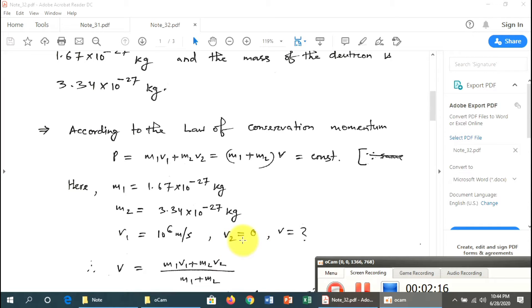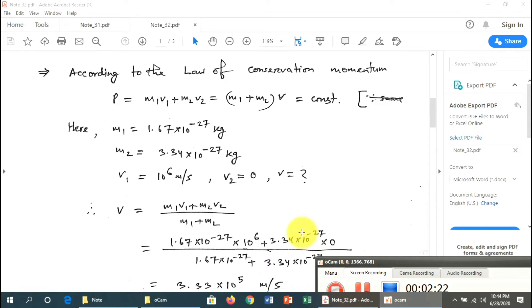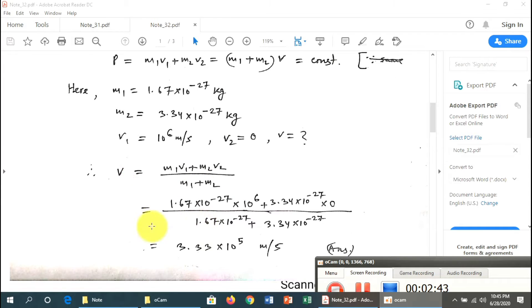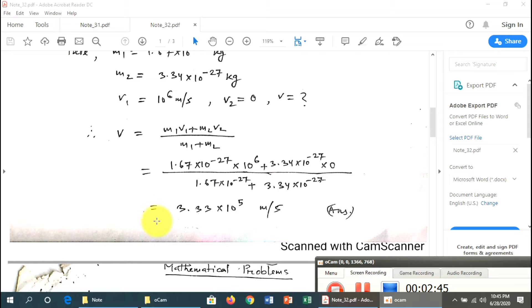The deuteron is at rest, so v2 equals zero. Using the formula m1v1 + m2v2 = (m1 + m2)v, we can solve for v. The final velocity v = m1v1 divided by (m1 + m2). The answer is approximately 3.3 × 10^5 m/s.